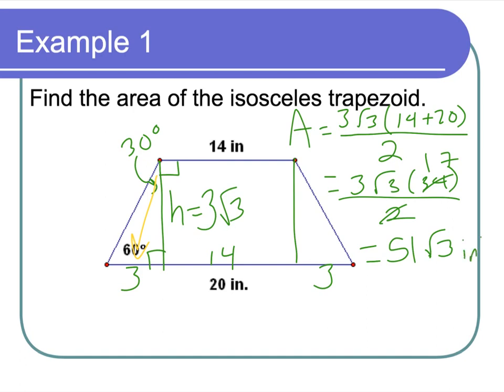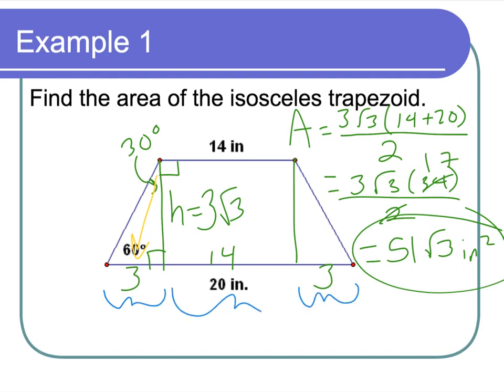That's 51√3 inches squared. Quick recap: I dropped my altitudes. If it's an isosceles trapezoid, I know these two lengths have to be the same. I created a rectangle, so 14 and 14 — opposite sides are congruent in a rectangle. I found my leftovers of 6 and divided by 2 to get 3 and 3, then used my 30-60-90 ratios to find the height.